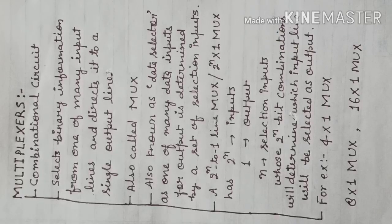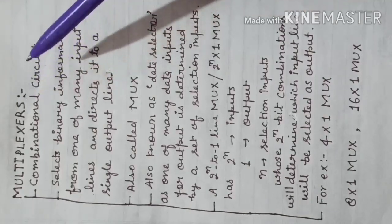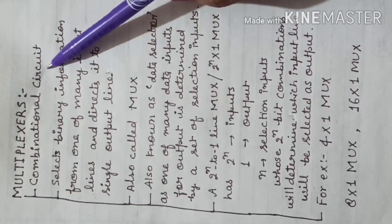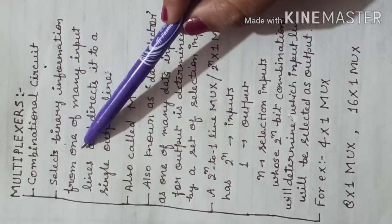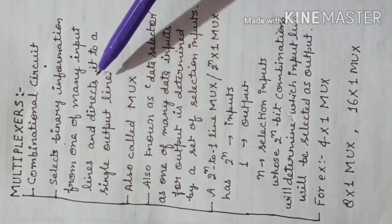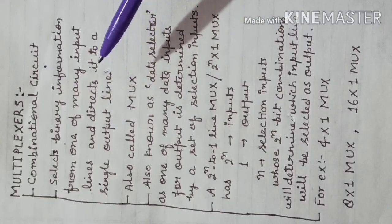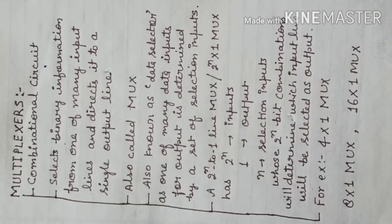In this video I will discuss multiplexers, the most important combinational circuit. Multiplexer is a combinational circuit like decoder, encoder, adder, subtractor etc. The purpose of multiplexer is to select binary information from one of many input lines and direct it to the single output line. Yani ki multiplexer bahut saare inputs mein se kisi ek input ko select karke output line par direct kar deta hai — deciding which input will appear as output.